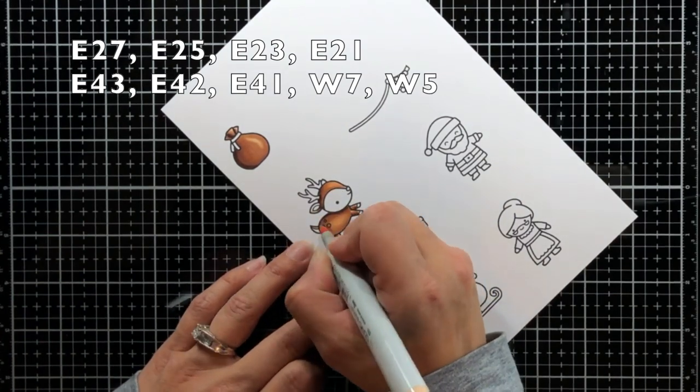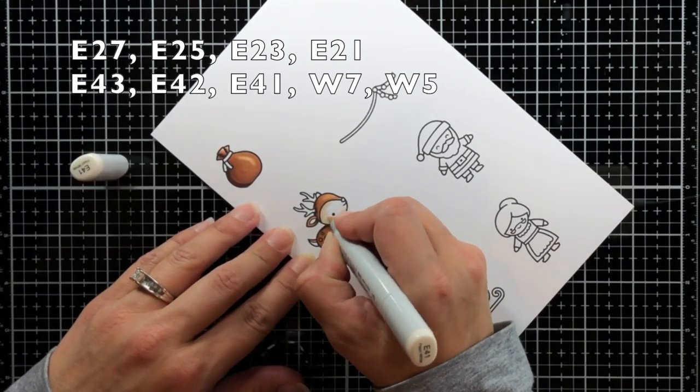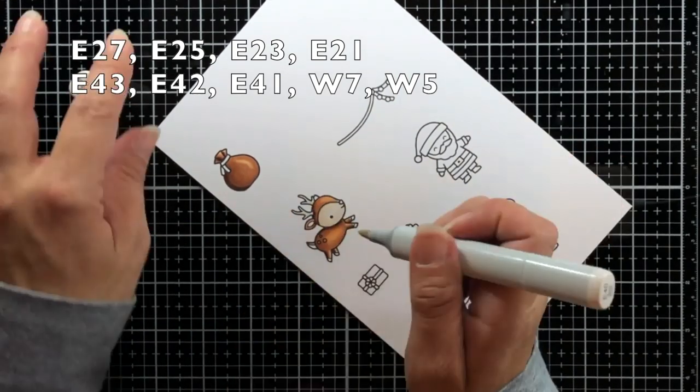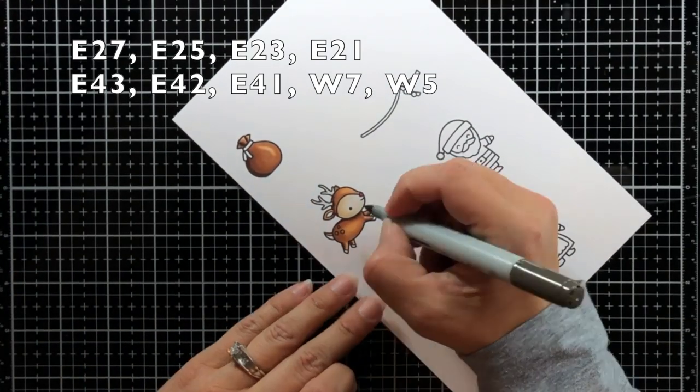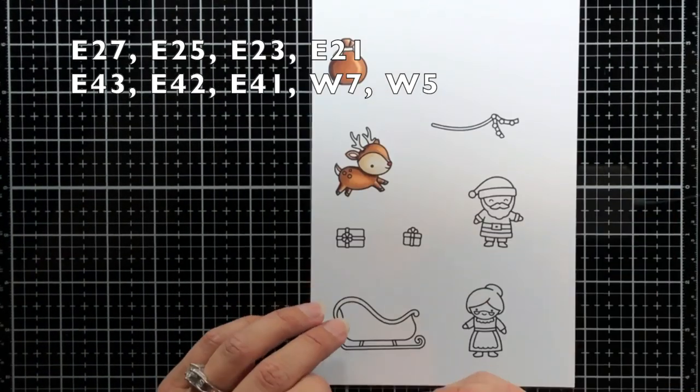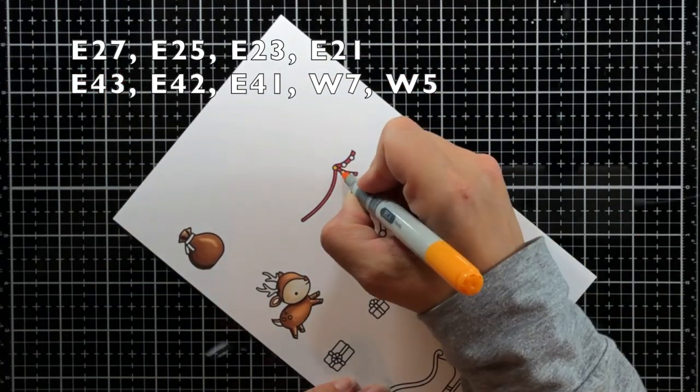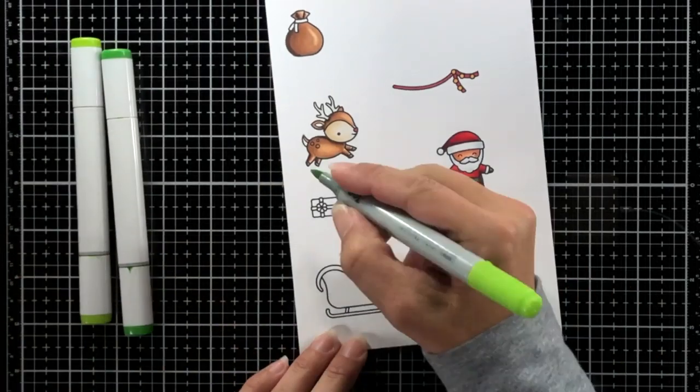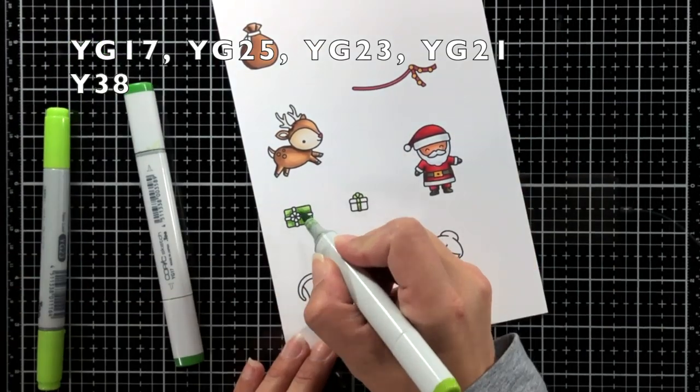I did try to use some of the same colors throughout so for the present sack and the deer I used E27, 25, 23, and E21. On the face I did use E43, E42, and E41 and then a little bit of W5 and W7 for the hooves.